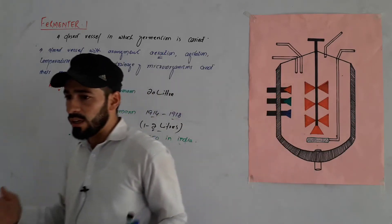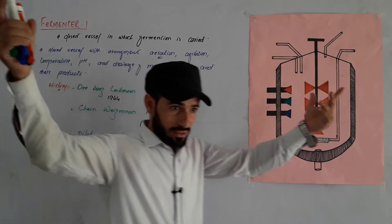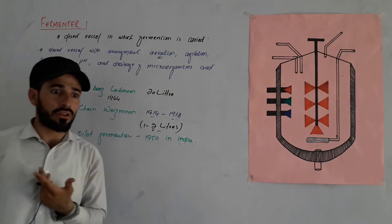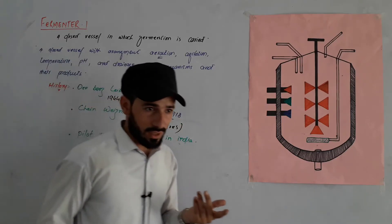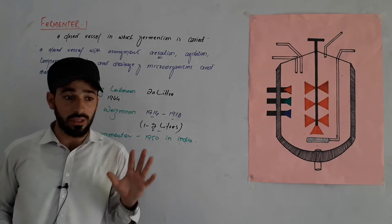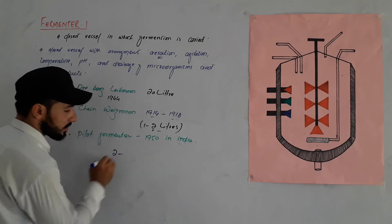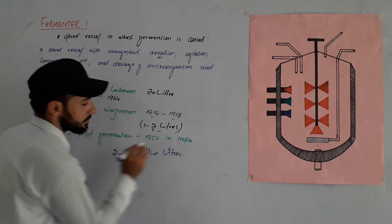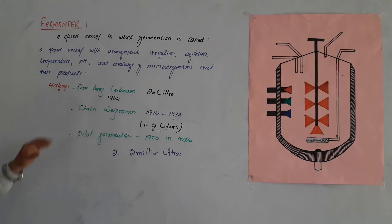Large industrial fermenters of up to one million liters are used in industries for large-scale production of vaccines, drugs, and other products to supply the whole world. The largest fermenters can hold up to two million liters and are used to meet global demand for products like beer and other fermentation-based goods.